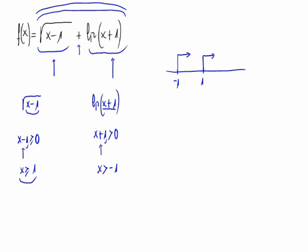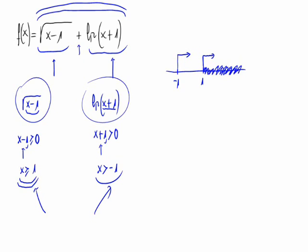As I said before, if we want f of x to have sense, both the root and the logarithm have to. This means that x has to be bigger or equal to 1 and bigger than minus 1. Which x makes this true? We see that these numbers have to be on the right of 1, which are at the same time bigger or equals 1 and bigger than minus 1. So the domain of f of x is from 1 to plus infinite.